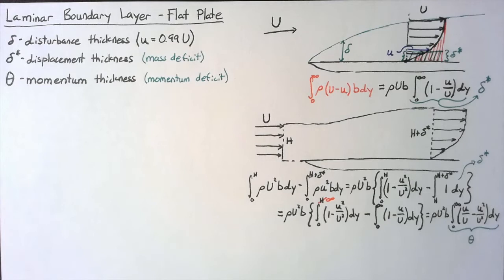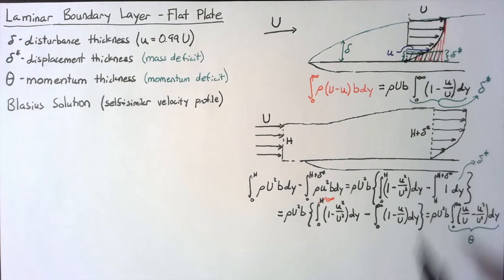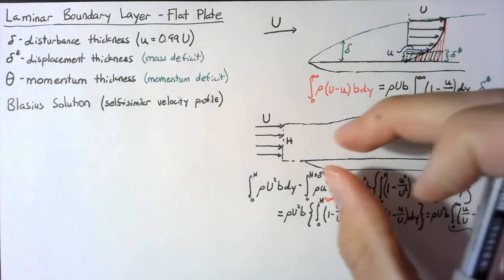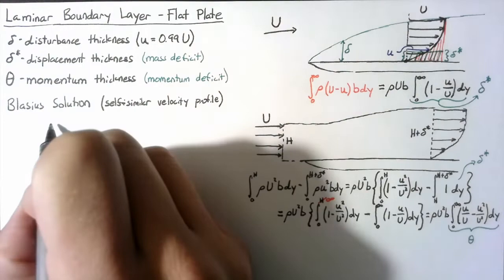Fortunately, we've had a solution for the value of the local flow field for a long time. That solution is known as the Blasius solution, and it is something called a self-similar velocity profile. What this means is that if we have a solution at one x location, then we should be able to squish it in just the right way to make it fit at any other location.